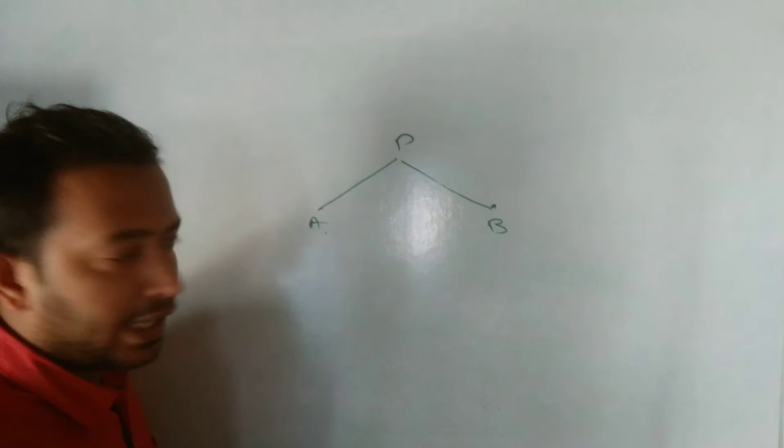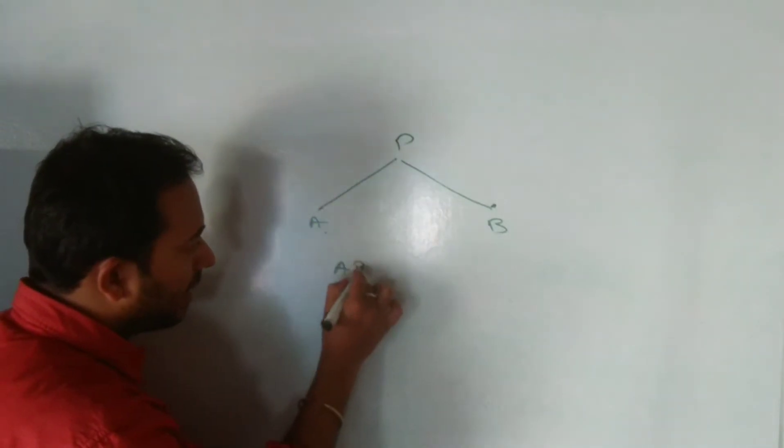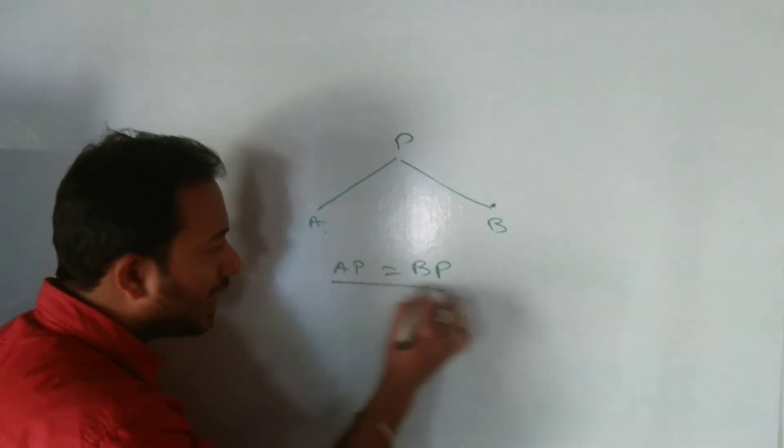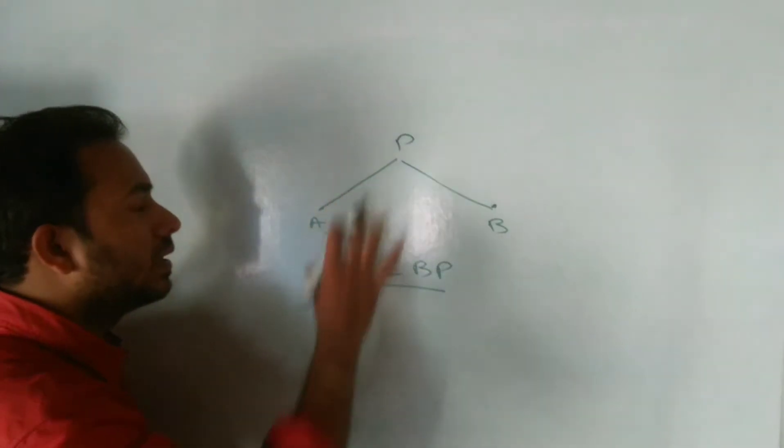Like if you have A and B two points, and if you take P as a point here, then the distance between AP and BP, if they are equal, then we call this equidistance.